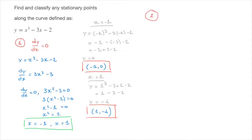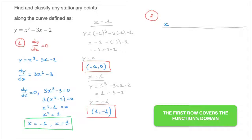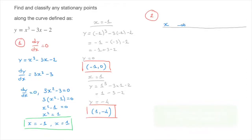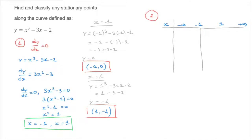I start by making a top row to represent the various values of x. Our function y equals x cubed minus 3x minus 2 is defined for all real numbers, so I write negative infinity all the way to positive infinity on that top row. I then add the x-values at which the function has stationary points — x equals negative 1 and x equals 1 — and draw vertical lines below those values to form the table columns.